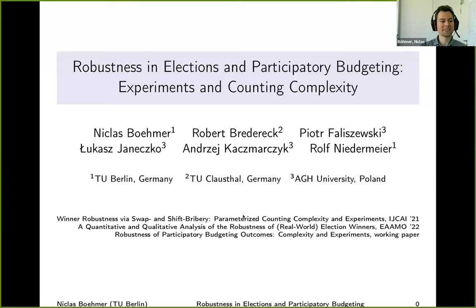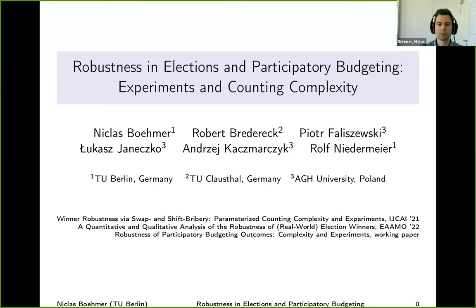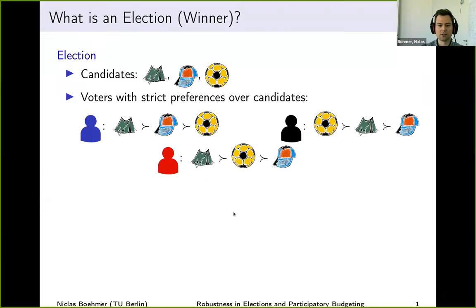Thanks for the introduction and for the invitation. I'm very excited to speak today about a series of works on robustness, elections, and participatory budgeting. As the title maybe already suggests, this talk will have two parts. The first one will be about elections, based on a paper, and the second will be shorter, about participatory budgeting, based on a working paper. All the authors are listed here, so this is joint work together with Robert, Piotr, Lukas, Andre, and Wolf. When I speak of elections, I will always mean single-winner elections where we are given a set of candidates and voters with strict preferences over candidates — no ties, the classical single-winner setting.